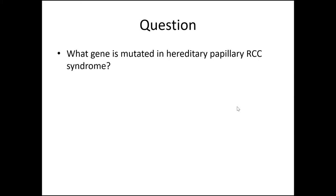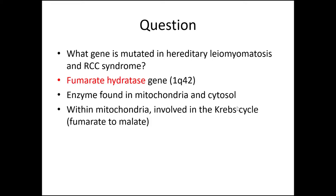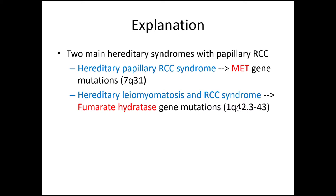What gene is mutated in hereditary papillary RCC syndrome? The answer is the MET oncogene on 7q31. What gene is mutated in hereditary leiomyomatosis and RCC syndrome? It's fumarate hydratase on 1q42 — an enzyme found in mitochondria and the cytosol that you may remember from the Krebs cycle. These are the two main hereditary syndromes to be aware of with papillary renal cell carcinoma.